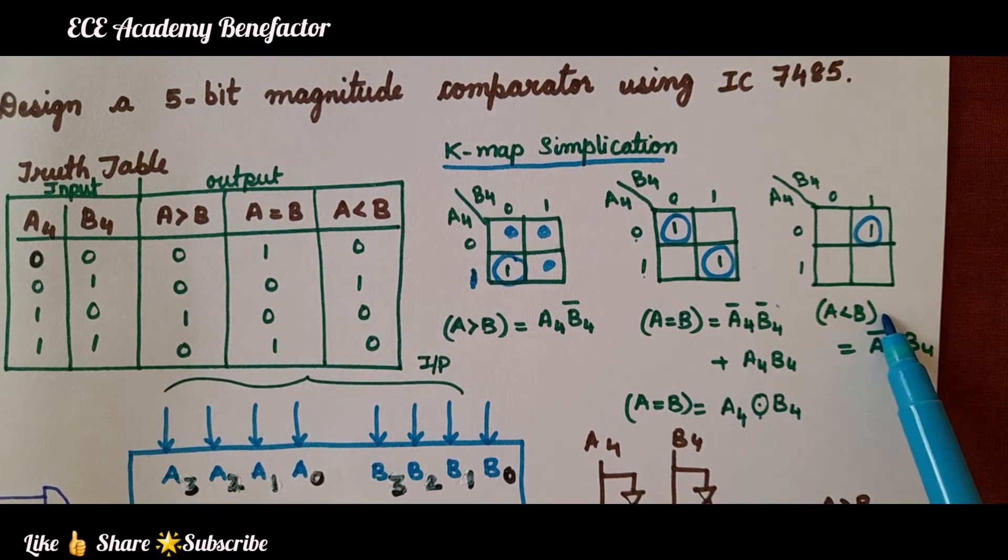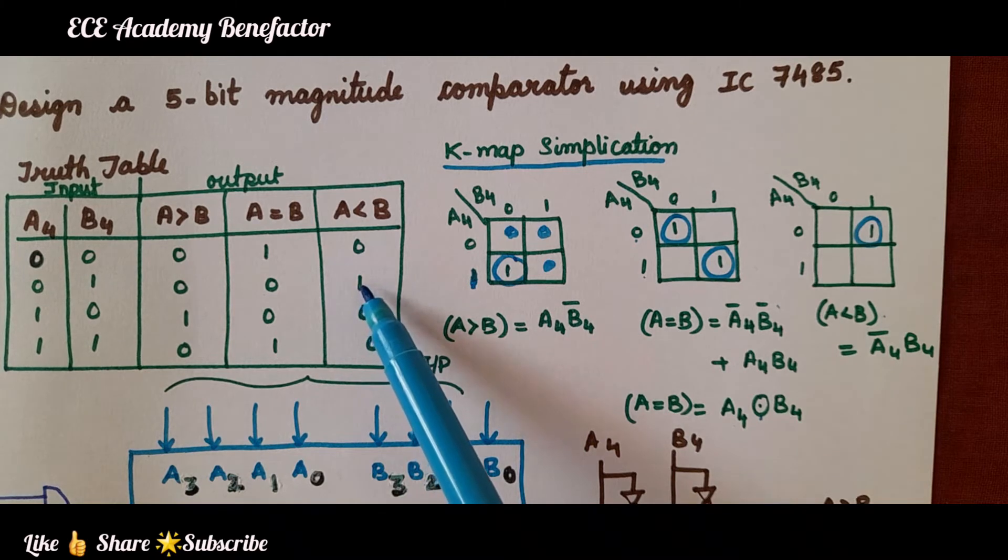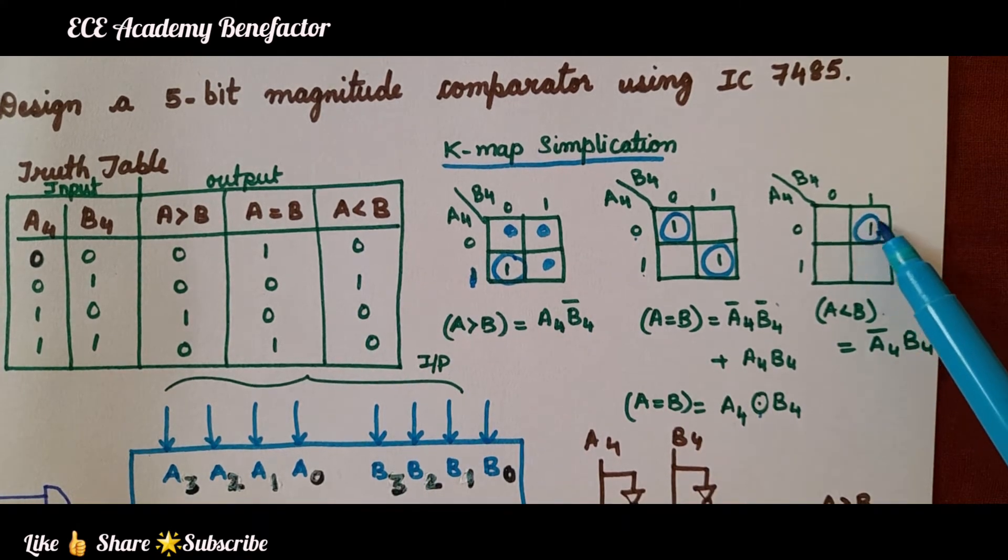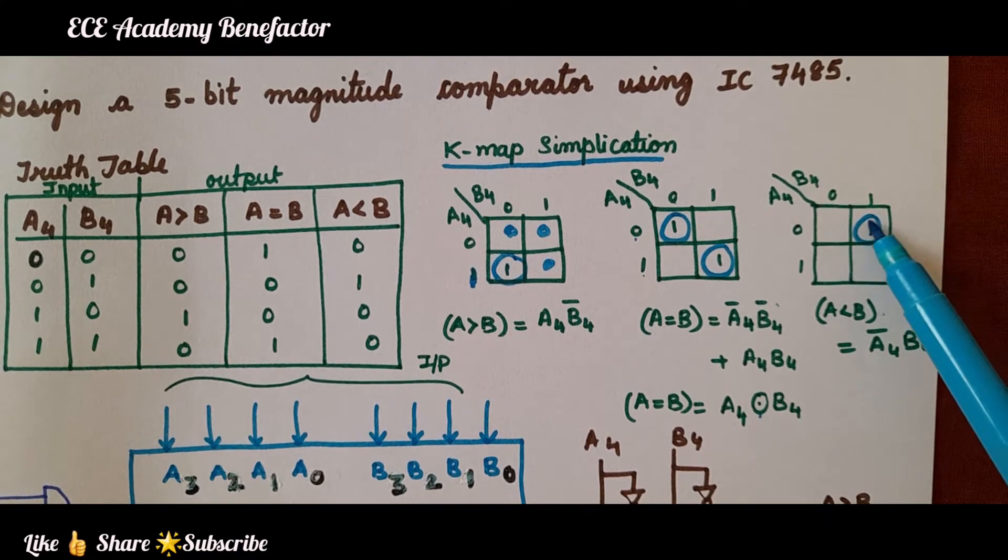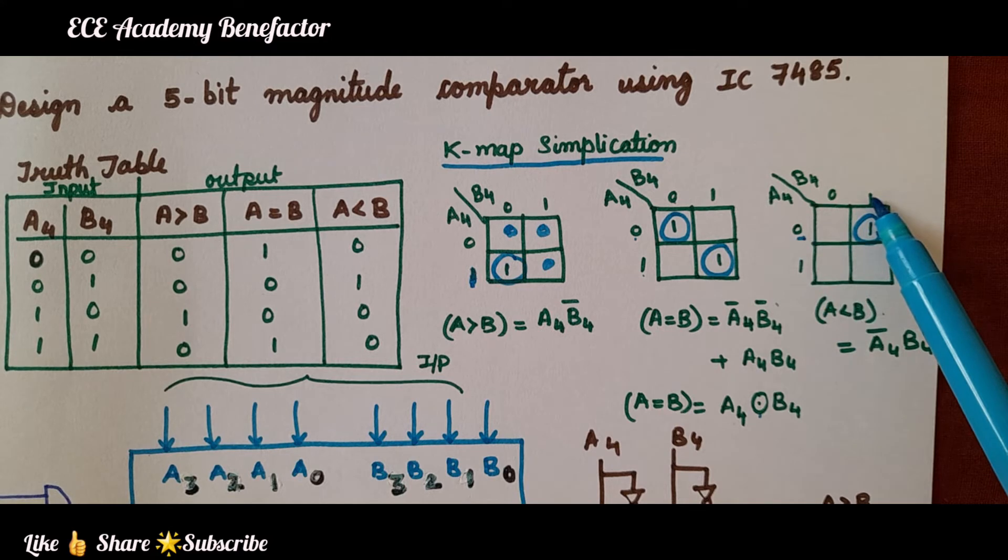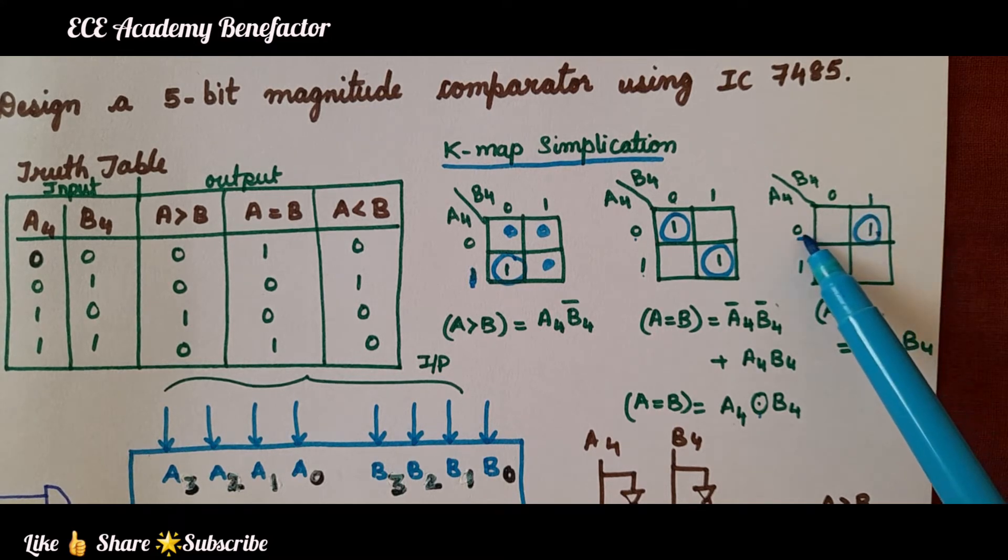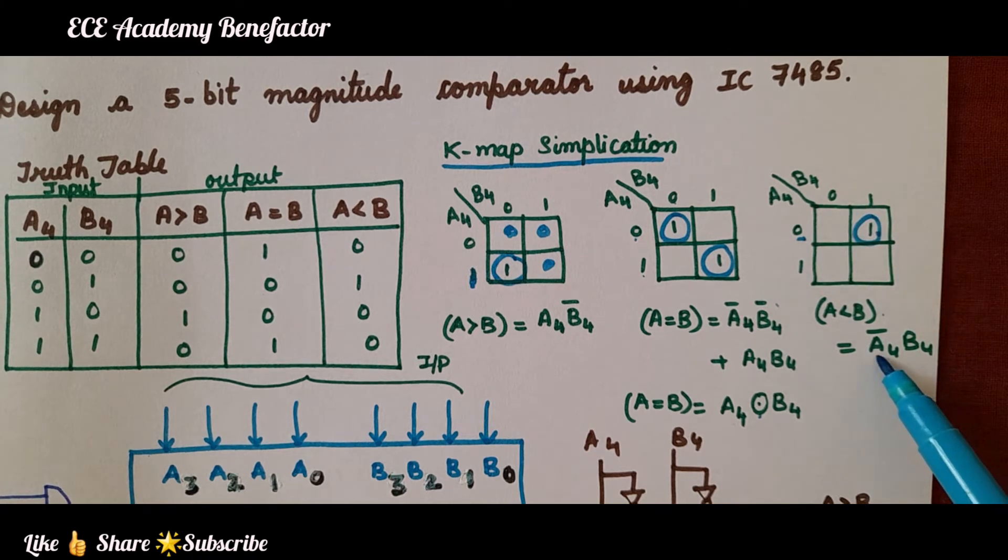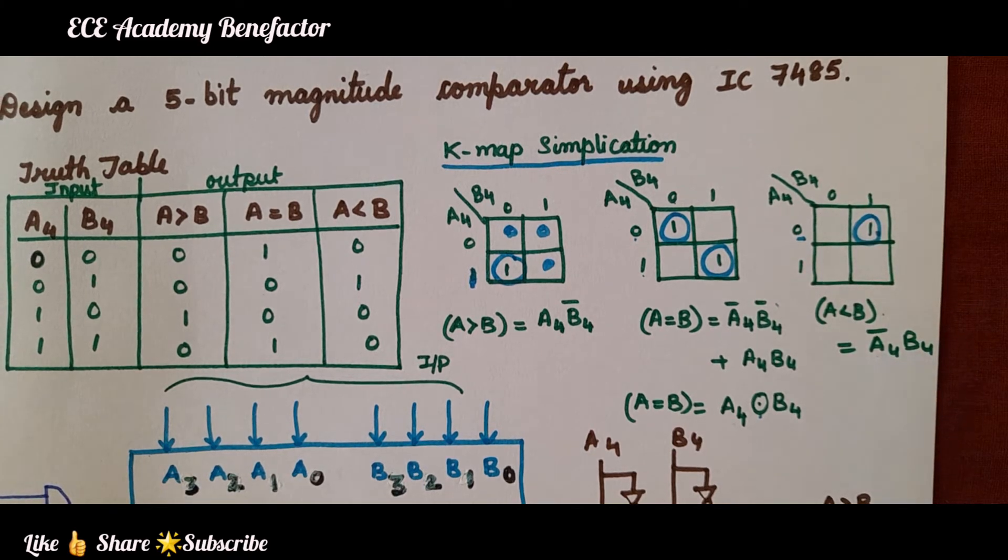Coming to A less than B, we are having only one which we have filled it in the K-map. There is only a single term. What is this number? It is 0 and this is 1, so what it will come: A4 bar B4.